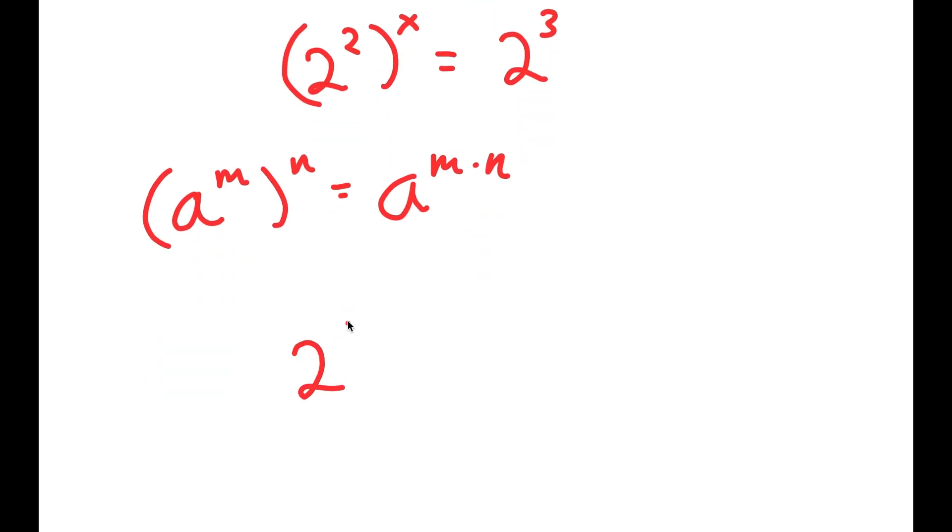So 2 to the power of 2 to the power of x is going to equal 2 to the power of 2x, and 2 to the power of 3 is going to leave that alone.